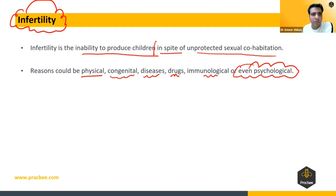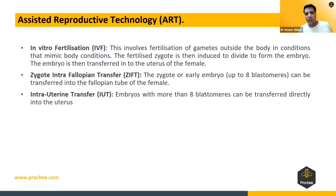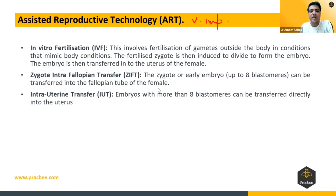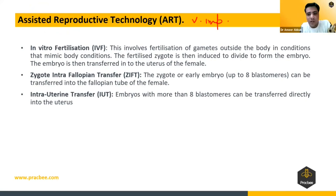Now the very important last topic is Assisted Reproductive Technology. These technologies are for those persons who are not able to conceive or sustain a pregnancy.